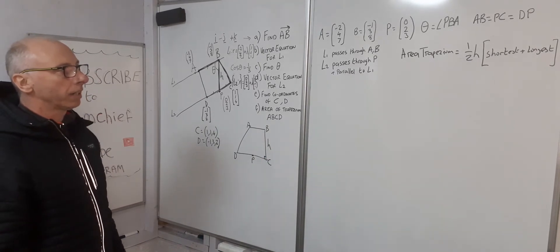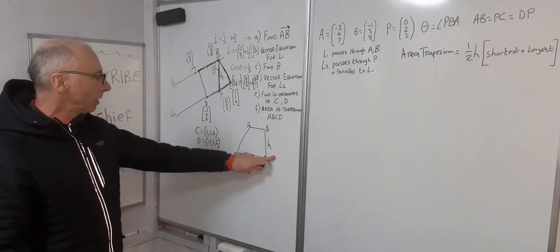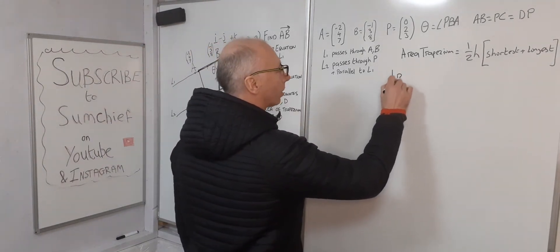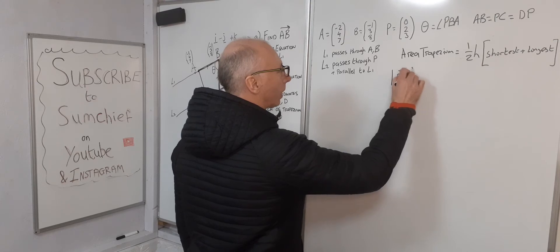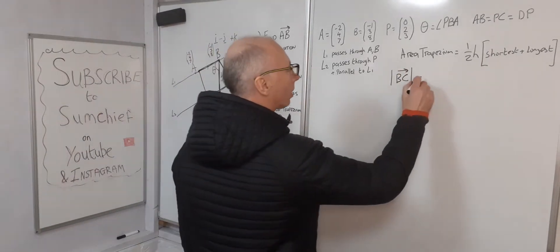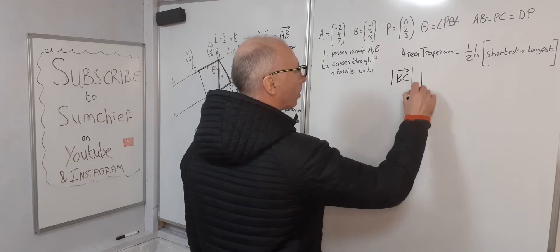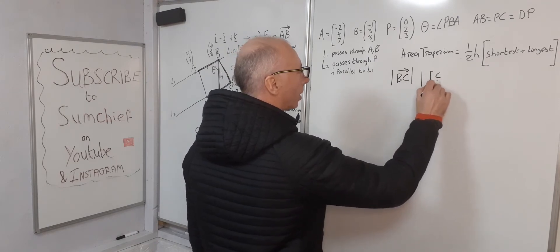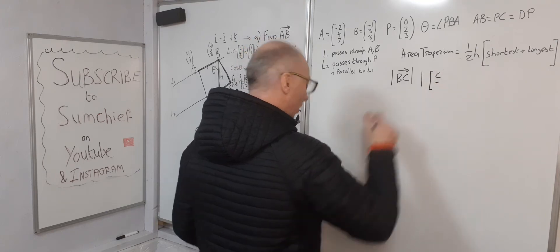The height is BC, so we need the absolute value of the vector BC. So BC, first of all that would be the absolute value of the vector C minus B.